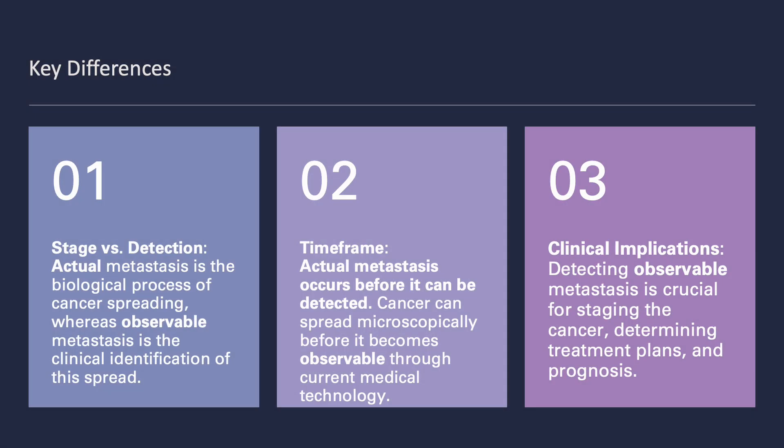The key differences between actual and observable metastasis revolve around the stage and detection of cancer spread. Actual metastasis is the biological process, happening microscopically and often undetectable initially. In contrast, observable metastasis is when the spread is identifiable through current medical technology. The time frame is crucial here — cancer can spread long before it becomes observable. Clinically detecting observable metastasis is vital for staging the cancer, determining treatment plans, and prognosis. This detection helps you and your doctor tailor treatments to target both primary and secondary tumors, aiming for the best possible outcomes.